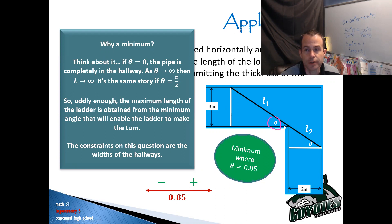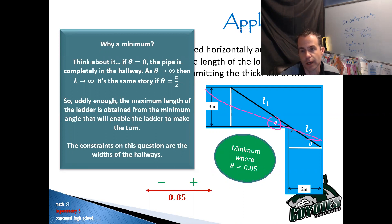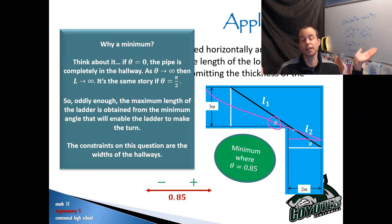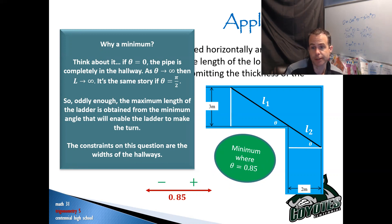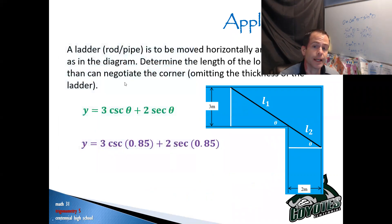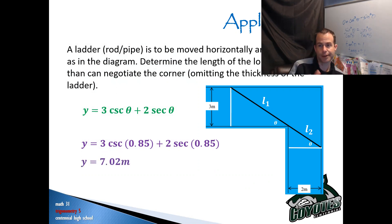Think about it: if theta equals zero, the pipe is completely flat in the hallway. As theta approaches π/2, the length approaches infinity from the other side. Oddly enough, the maximum length of the ladder is obtained from the minimum angle that will allow the ladder to make the turn. As the angle gets smaller, you get a longer ladder — let me show you that with a picture. The smallest angle possible gives the longest ladder length. So plugging theta equals 0.85 back into the original function gives approximately 7.02 meters — that's the longest possible ladder that can negotiate the corner.